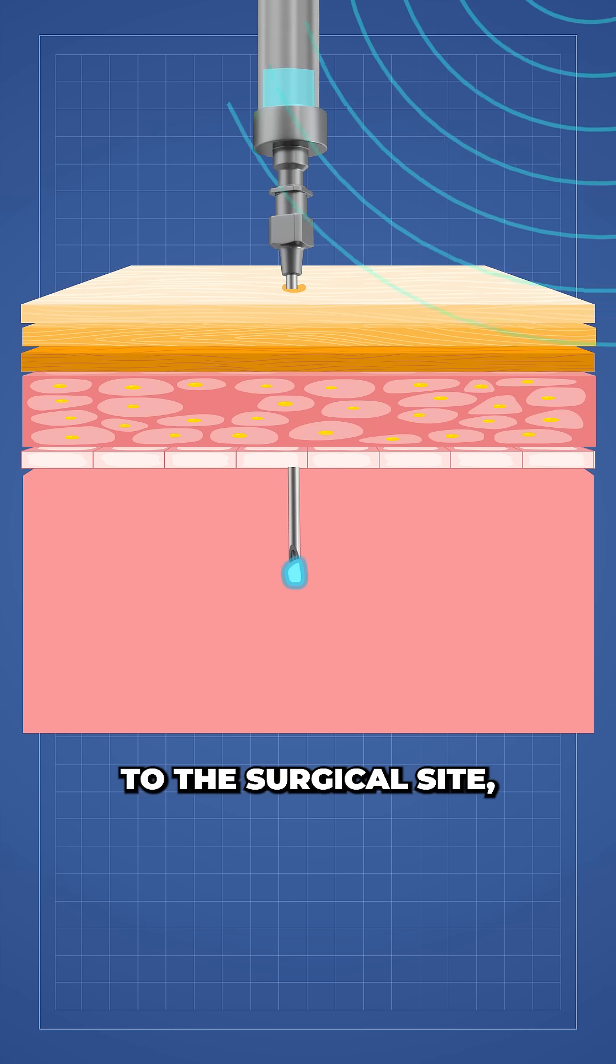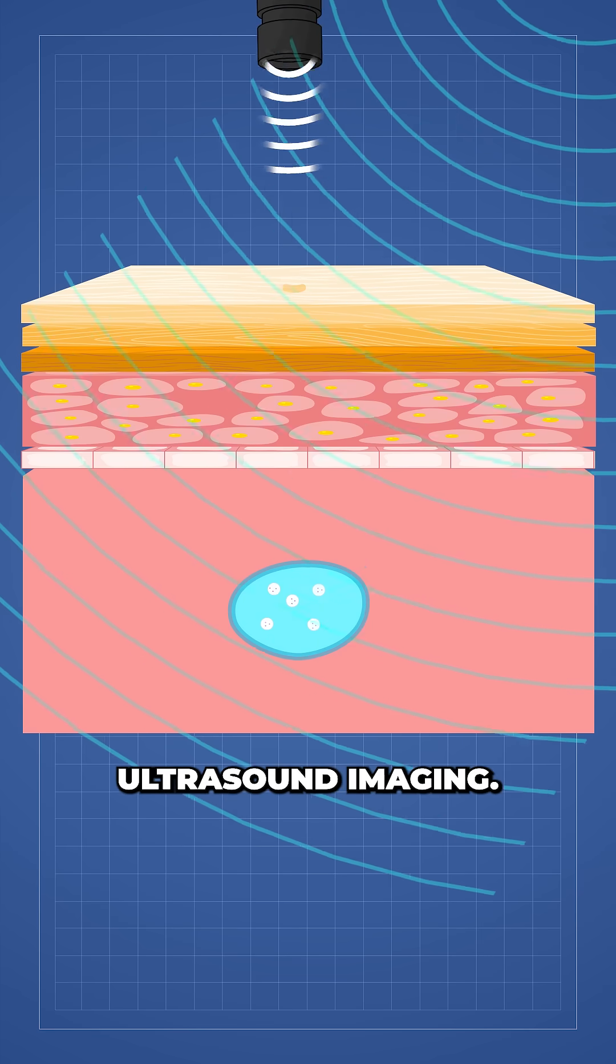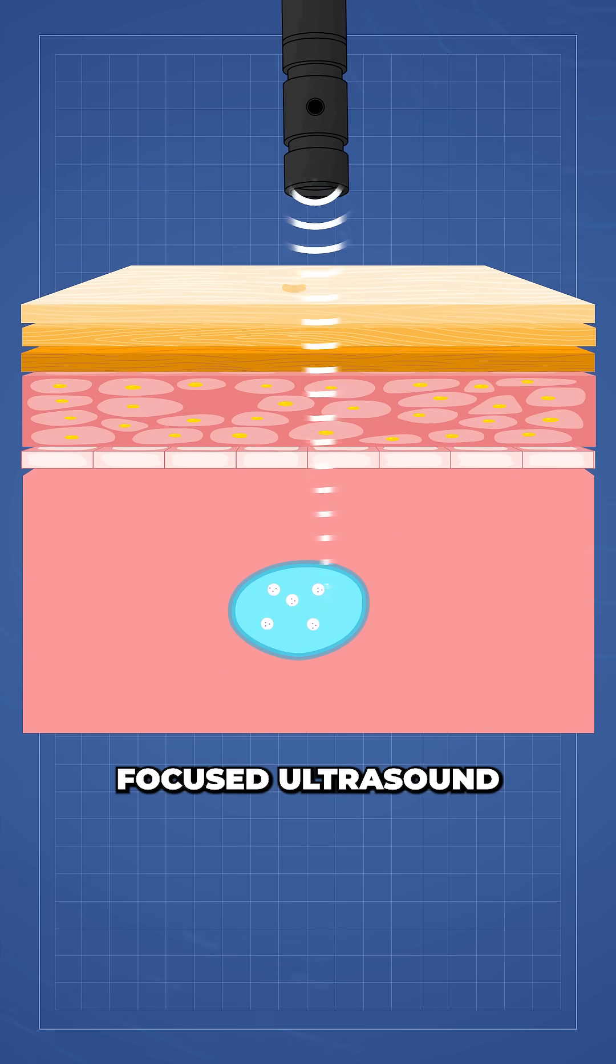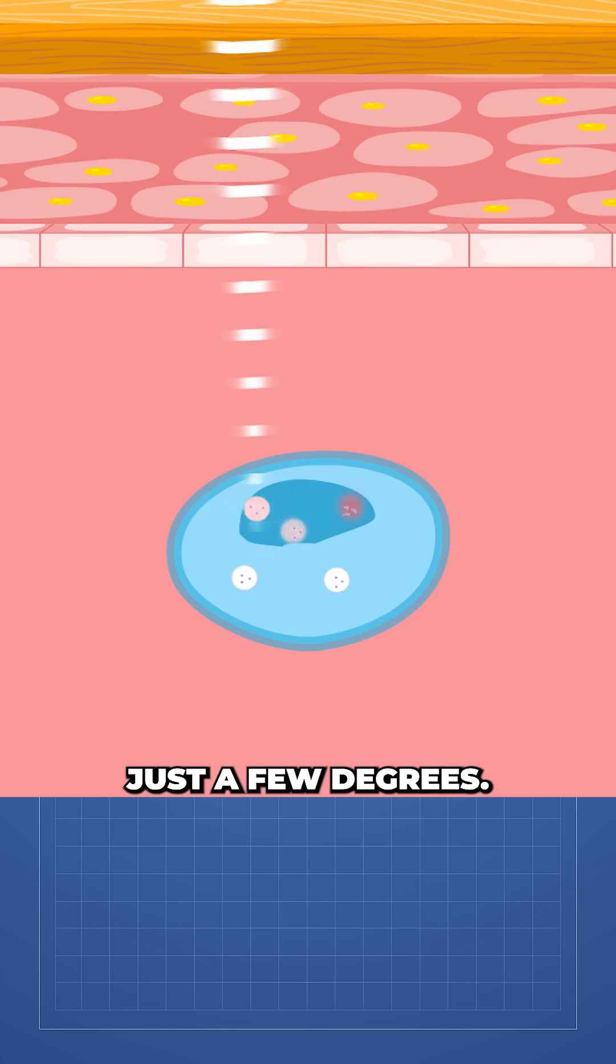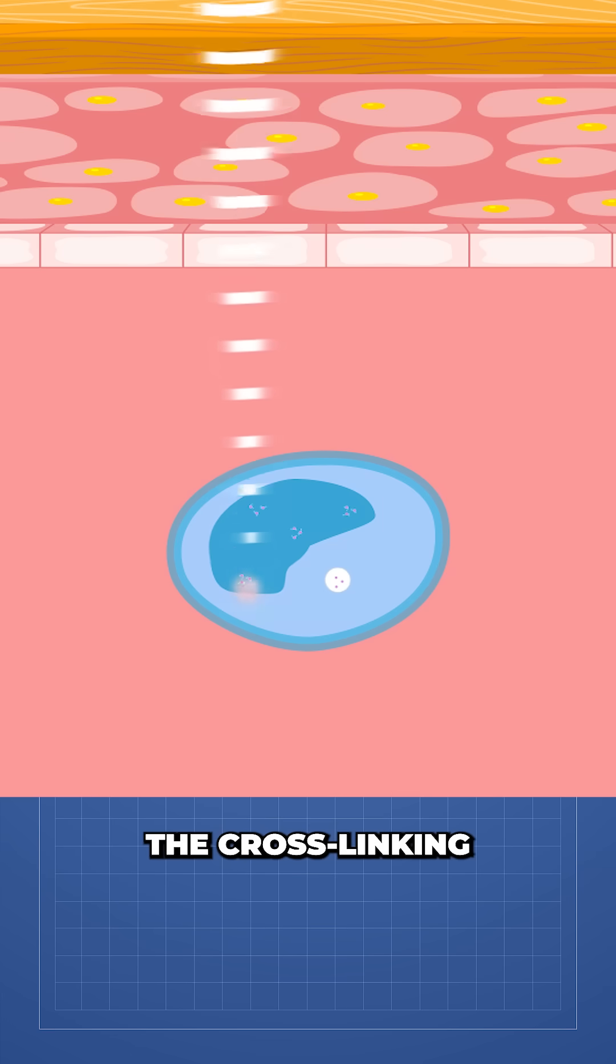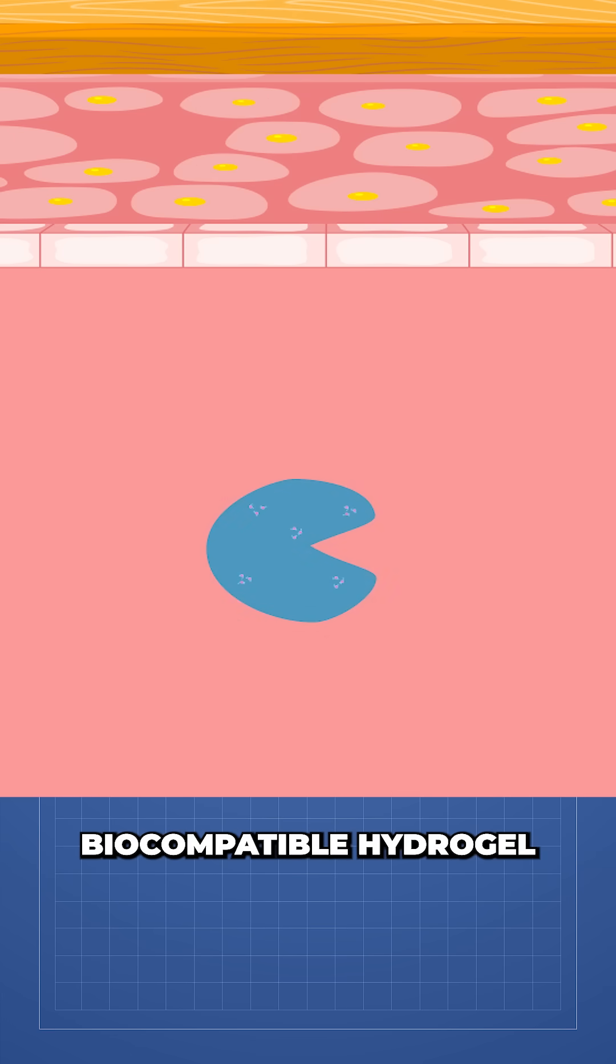After injecting the material to the surgical site guided by real-time ultrasound imaging, the researchers used focused ultrasound to gently heat the ink by just a few degrees. This triggered the liposomes to release the cross-linking agents, which transformed the liquid ink into a stable biocompatible hydrogel in a specific and controllable shape.